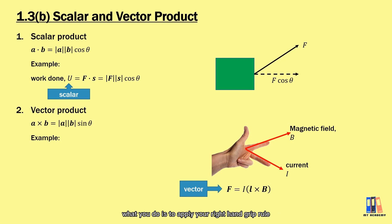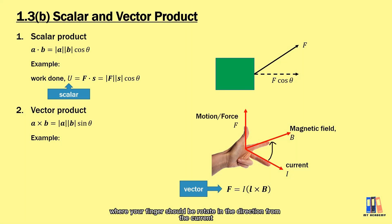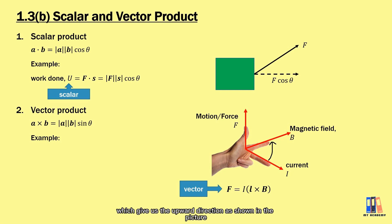To determine the direction of the magnetic force, you apply the right-hand grip rule, where your fingers should be rotated in the direction from the current to the magnetic field, which gives the outward direction as shown in the picture.